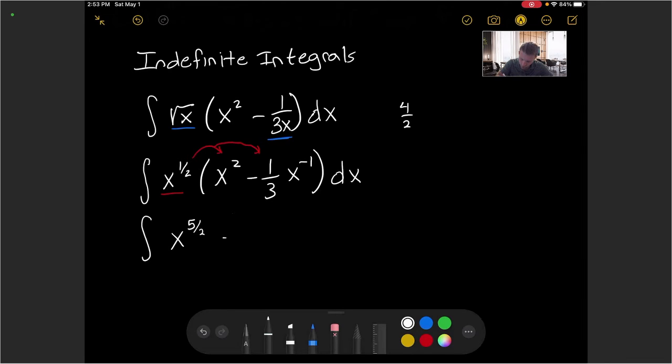We'll have minus 1 third, and then 1 half plus a negative 1 will give us x to the negative half. And everything here is dx. So we're taking now this integral, we have two terms, and so we have two antiderivatives to figure out.